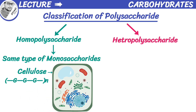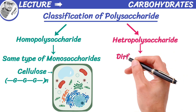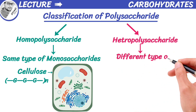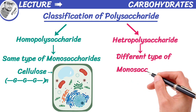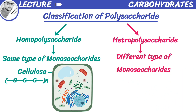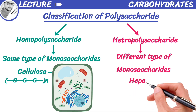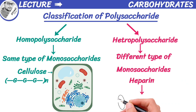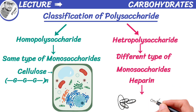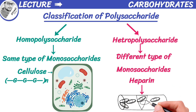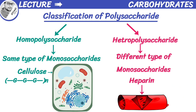A polysaccharide that contains different types of monosaccharides is known as a heteropolysaccharide. Heparin is a heteropolysaccharide found in our blood that plays an important role in preventing blood clots.